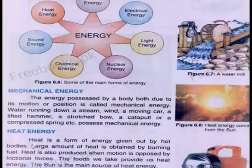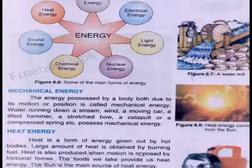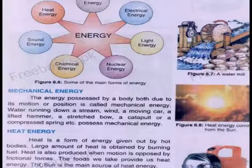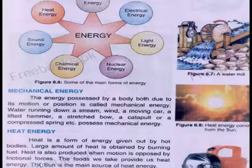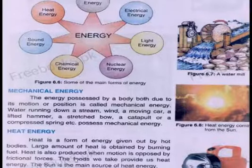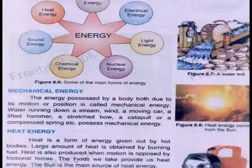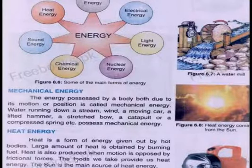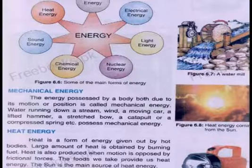Heat is a form of energy given out by hot bodies. A large amount of heat is obtained by burning fuel. Heat is also produced when motion is opposed by frictional forces — for example, when machine parts move against each other they become very warm. The sun is the main source of heat energy.